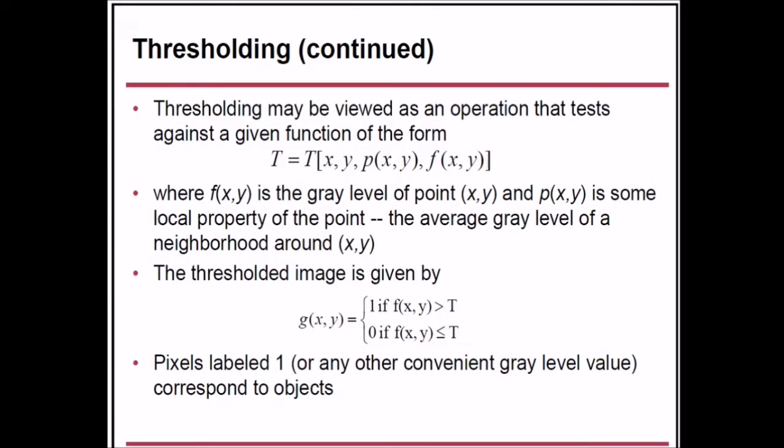Thresholding may be viewed as an operation that tests against a given function of the form T equals threshold of (x,y), p(x,y), and f(x,y). This f(x,y) is our original image, the gray level of point (x,y), and p(x,y) is some local property of the point, like the average gray level of a neighborhood around (x,y). The threshold image is given by g(x,y), which is 1 if the original image is greater than T, or 0 if less than or equal to T. Pixels labeled as 1 correspond to objects.